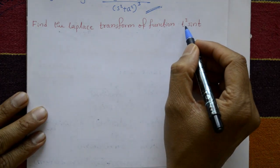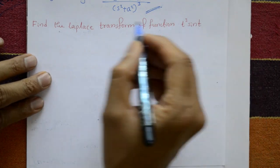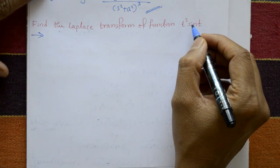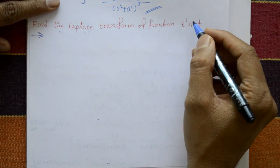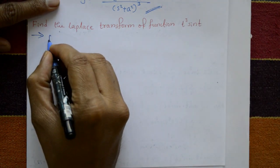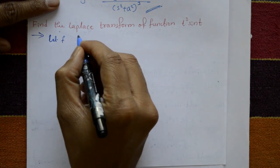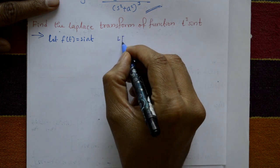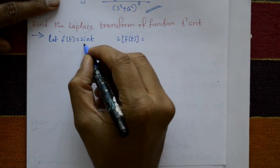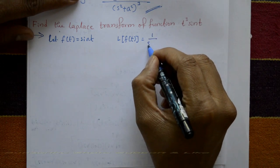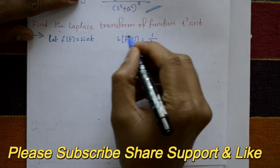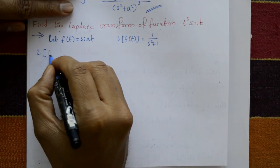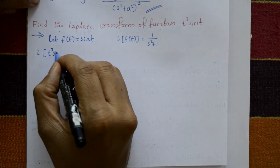Find the Laplace transform of the function t³·sin(t). In this problem we use a standard function and the derivative property. Let f(t) = sin(t). Taking the Laplace transform of both sides, L{sin(t)} = 1/(s²+1), where a = 1.